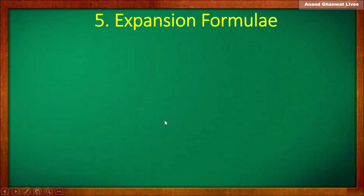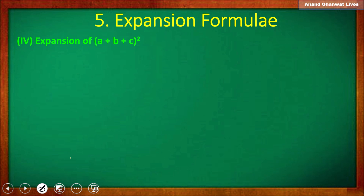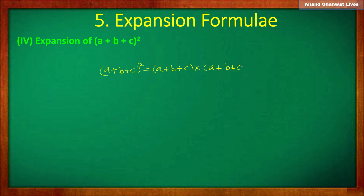Hello all students from 8th standard. Let us learn the expansion formula — the square of a plus b plus c. The expansion of (a+b+c)² means a plus b plus c into a plus b plus c, which is a trinomial multiplied by a trinomial.